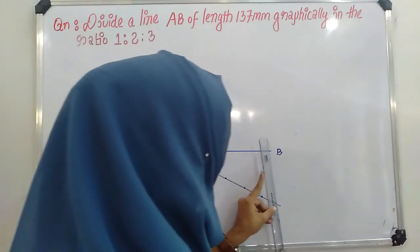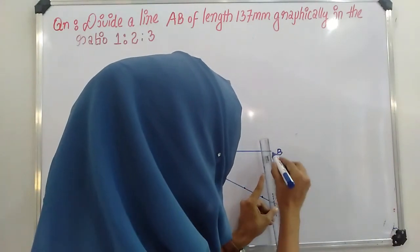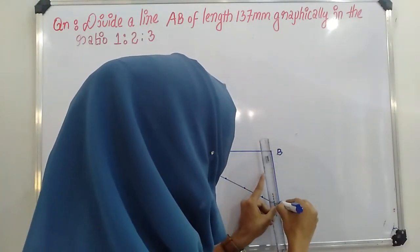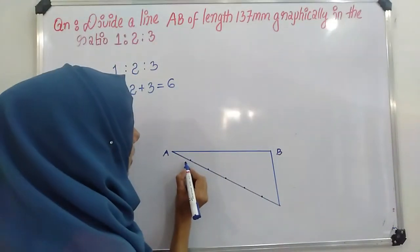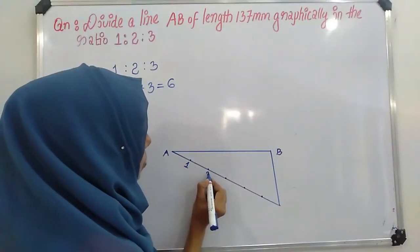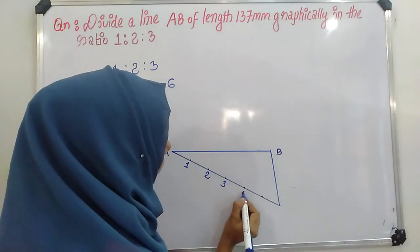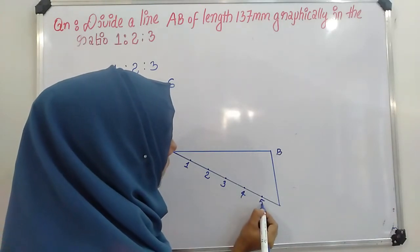Now, join end point. Number it as 1, 2, 3, 4, 5, 6.